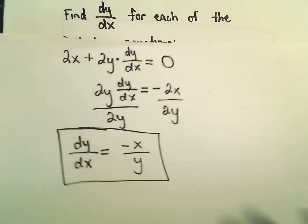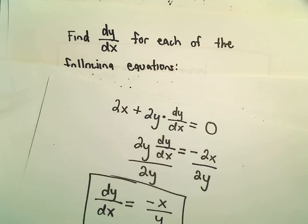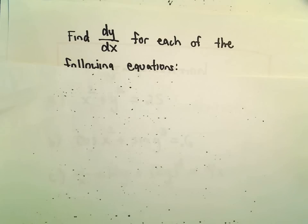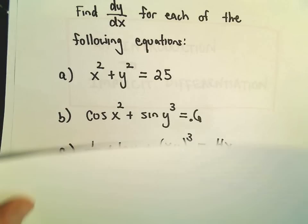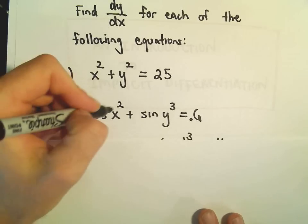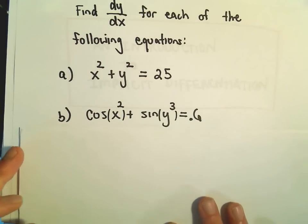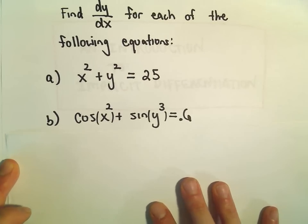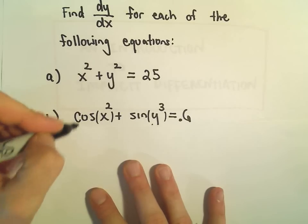So let's look at at least one other example, maybe one that's a touch more complicated — hopefully nothing too crazy. Let's do the derivative of cosine of x squared plus sine of y cubed equals 0.6. We'll take the derivative of this, and we'll have to use the chain rule.